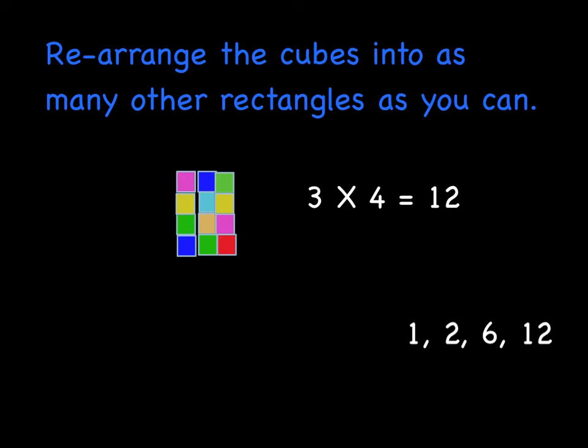And because we did this systematically, we found that there was 1 and its number was a factor, 2 and 6 was a factor, and then we went up to 3 and 4 was a factor. Now we're done.